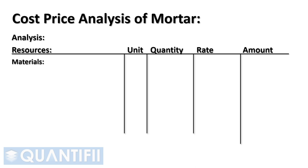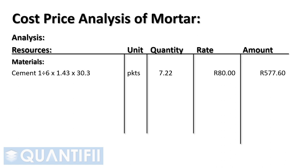In order to calculate the cost of one cubic meter of mortar, consider the following: 1 part cement, divided by 6 parts, multiplied by 1.43, multiplied by 30.3 pockets of cement per cubic meter. This gives us a quantity of 7.22 pockets required for our cubic meter of mortar. The cost of a pocket is 80 rand, therefore the cost of cement to mix a cubic meter of mortar is 577.60 rand.